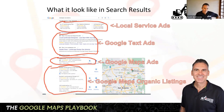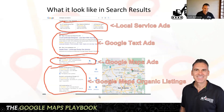Which do you click on personally? If you could type in the Q&A — do you click on local service ads? Do you click on Google text ads? Do you go to the map section and click there? I'd be very curious to know where you personally click. Type in the Q&A box, I would love to know.